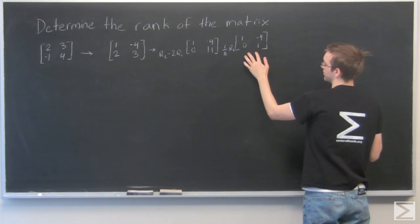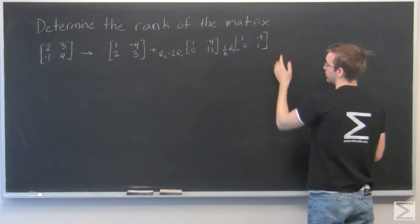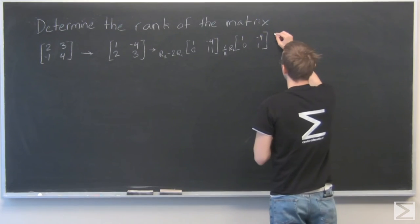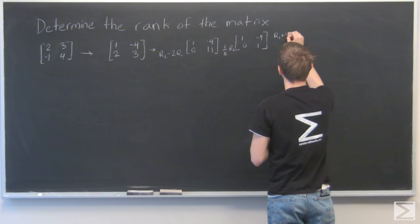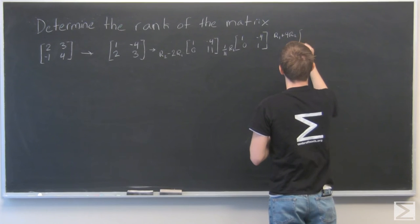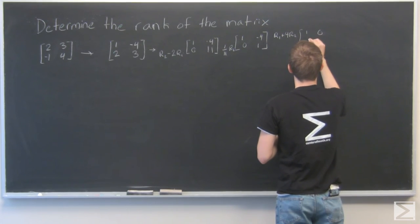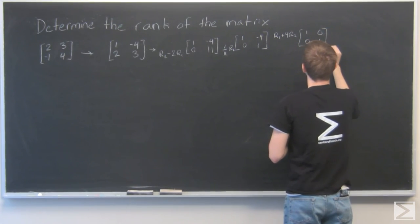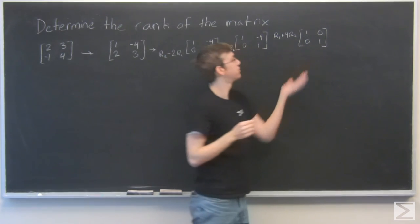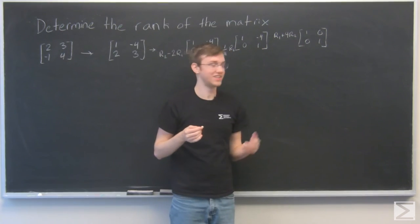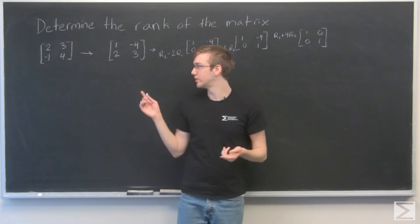And from there, I can just add this row to the first row 4 times to get that into a 0. So, here we have a perfect identity reduced row echelon form of this matrix.